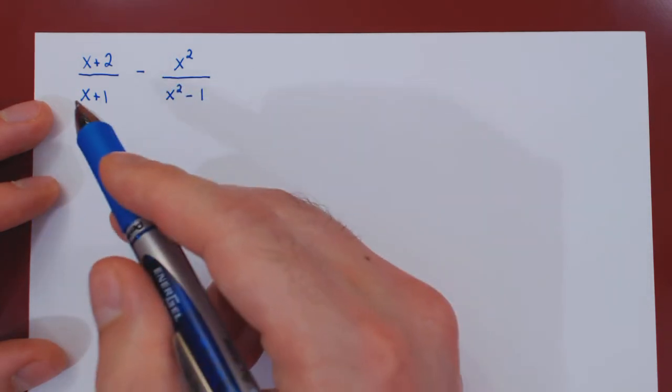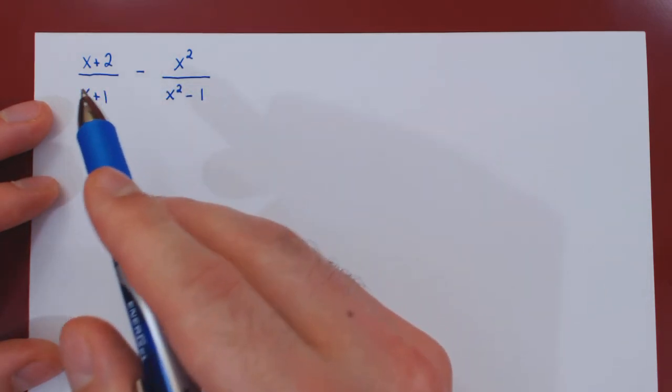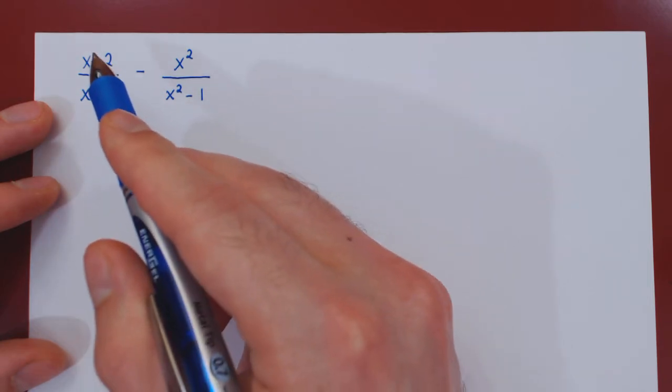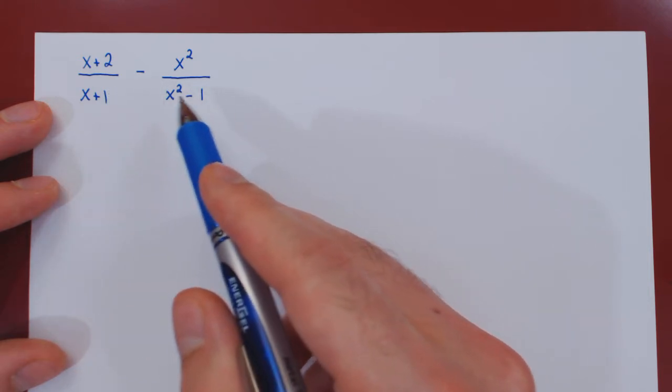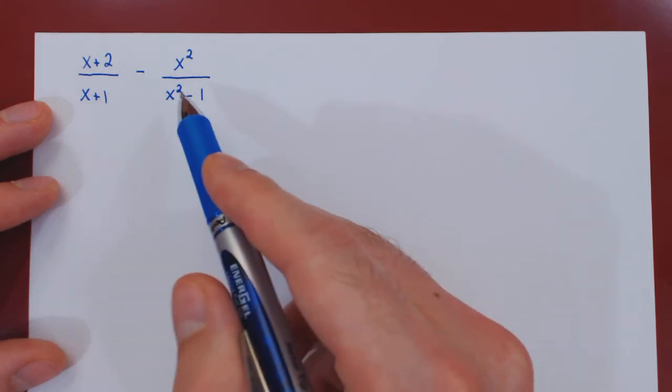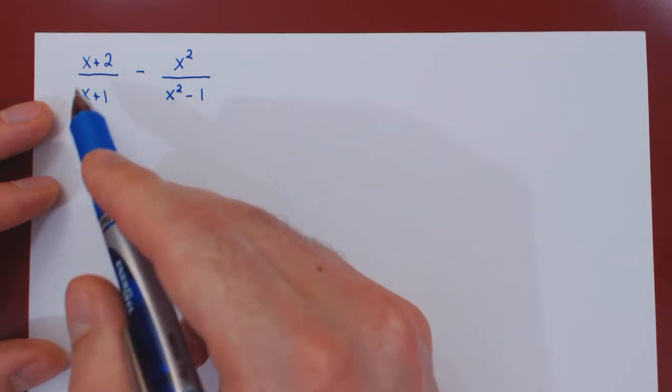So the first thing is we're looking for a common denominator, but if you are careful here, we shouldn't just cross multiply right away. If you notice, the first denominator and the second, they do share a common factor, and that is of course x plus 1.